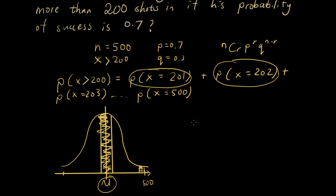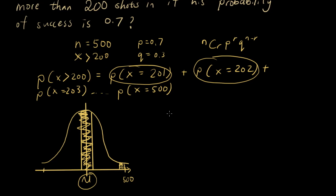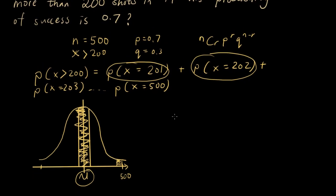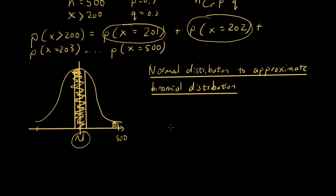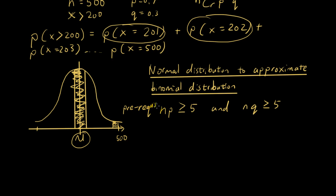This formula can only be used when you're using normal distribution to approximate binomial distribution. In order for us to be able to do this, the first thing you need to check is that n times p is greater than or equal to 5, and n times q is greater than or equal to 5. That is the prerequisite. If this is not satisfied, then you can't use normal distribution to approximate binomial distribution.